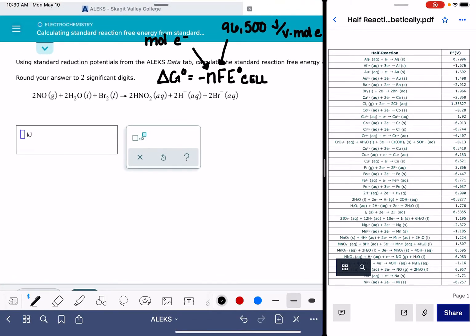So the first thing that we really need to do is calculate E cell. And while we're calculating E cell, we're also going to be able to see when we look at those half reactions, we'll be able to see what the value of n is.